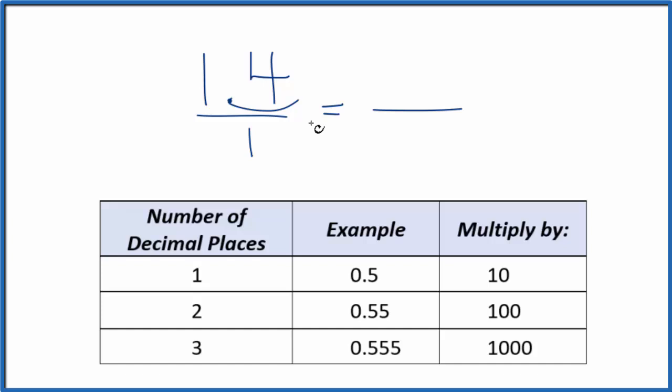Next, we have one decimal place here. When we have one decimal place, we're going to multiply by 10.